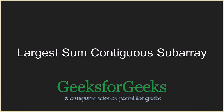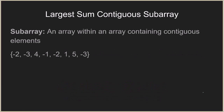Hello everyone and welcome to GeeksforGeeks. Today we are going to see the largest sum contiguous subarray problem. Before going into the details, let us discuss what we mean by a subarray. A subarray is basically an array within an array containing contiguous elements. For example, given an array, a subarray could be minus one, or one, five and minus three, or all the elements together.